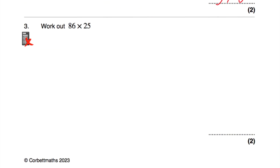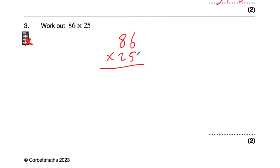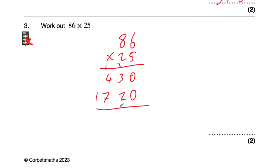Question number 3, we've been asked to work out 86 multiplied by 25. We're going to do 86 multiplied by 5, then 86 multiplied by 20, and add them together. 5 times 6 is 30, put our 0 down, carry our 3. 5 times 8 is 40, plus 3 is 43, so 86 multiplied by 5 is 430. For 86 multiplied by 20, put our 0 down, 2 times 6 is 12, carry our 1, 2 times 8 is 16 plus 1 is 17, so that's 1720. Adding together gives 2150.